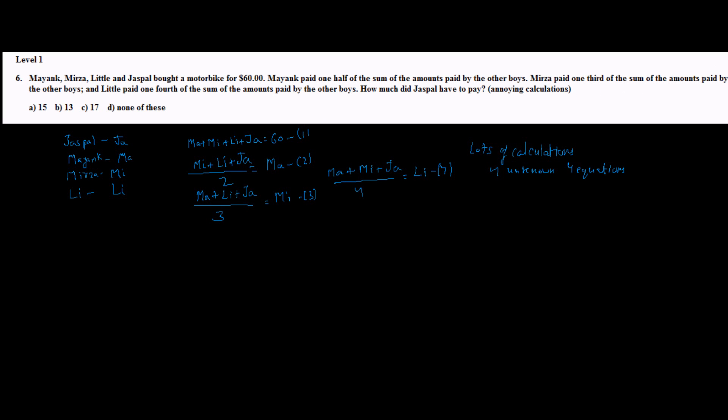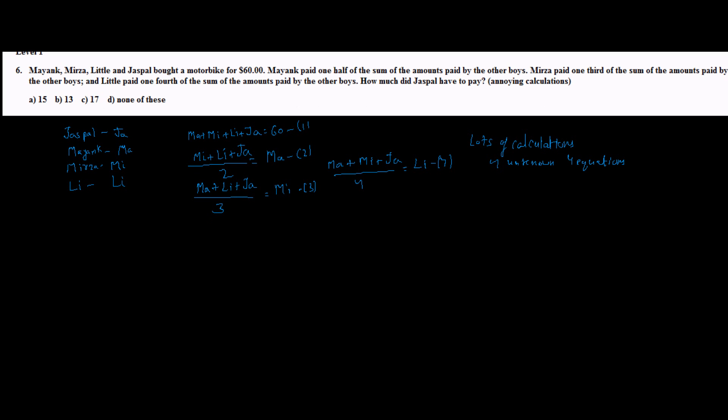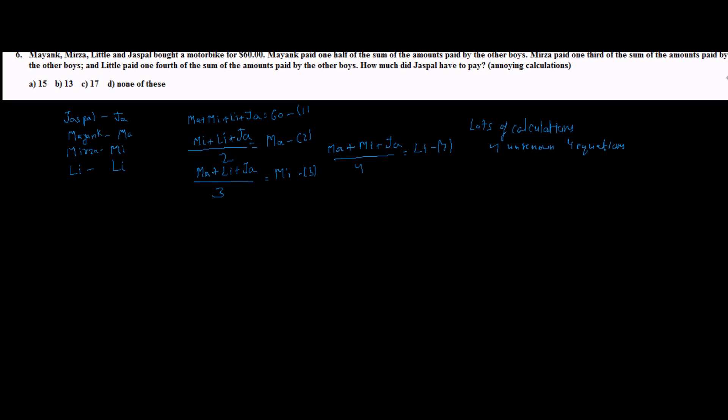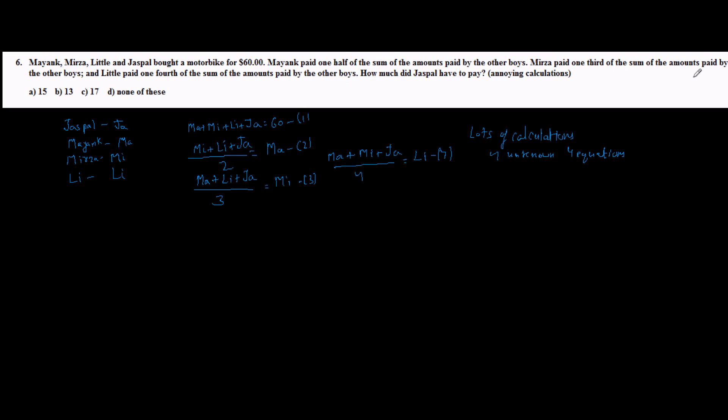Since you have to do lots of calculations using four unknowns and four equations, what is the way out to avoid these calculations? There is no fixed pattern, but since CAT people are smart people, they design problems such that they can be solved easily. There is an easy way out, so you have to look for a pattern.